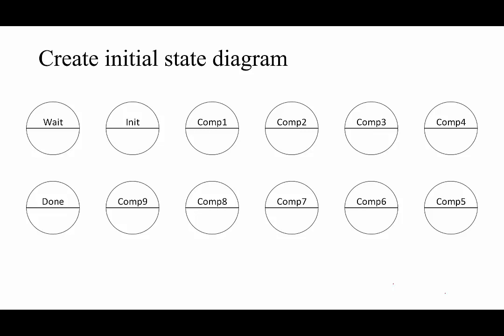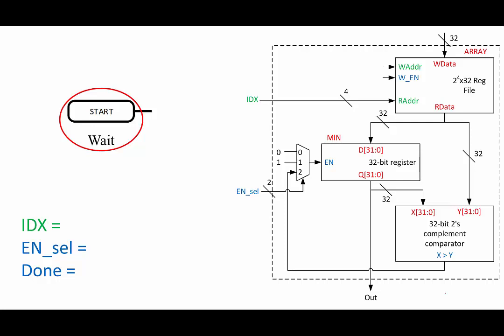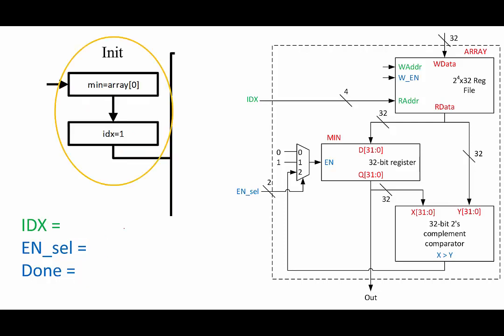Let's first consider what control signals each of these states should produce. In the wait state, we want the done flag to be zero. Because we know that we are going to initialize after the wait state, it probably doesn't matter exactly what we set index and enable to. Let's set index to be zero in preparation for the initialization, and enable select to zero so we don't write anything to minimum. For the initialized state, we always want to write to the minimum register from array index zero. We are still not done with our calculation, so done will be zero. Note that we're going to set index equals one by progressing to the next state after the clock edge.